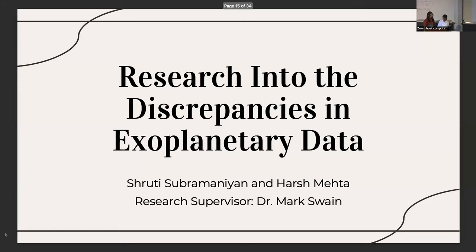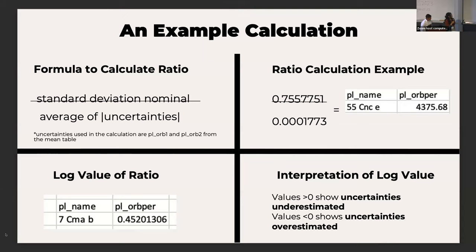Hi, my name is Harsh and I'm a rising senior at Springsteen High School. And I'm Shruti Subramanian, about to be a freshman undergrad at Purdue University. We've been looking through data in the NASA Exoplanet Archive to see the extent of discrepancies in data reported for a set of 11 different parameters. We use a formula taking the standard deviation of the nominal values over the average of all the error values, with a quick example for 55 Cancri e. We take the log of those ratio values to make them easier to work with, and the graphs on the next slide are made using these log values.